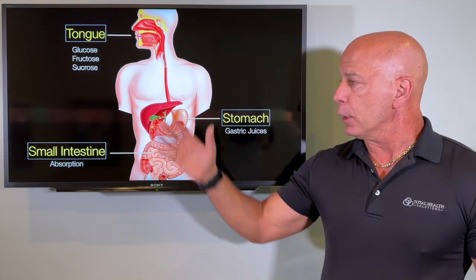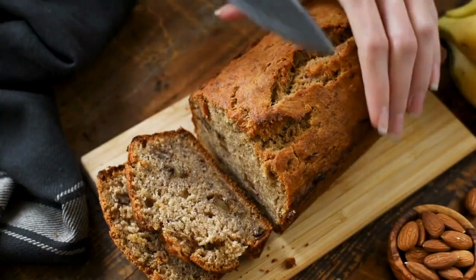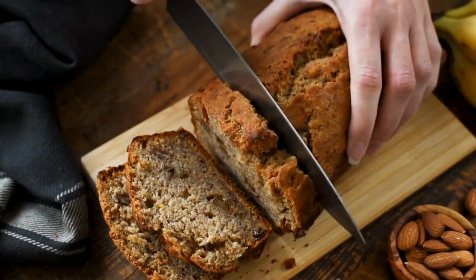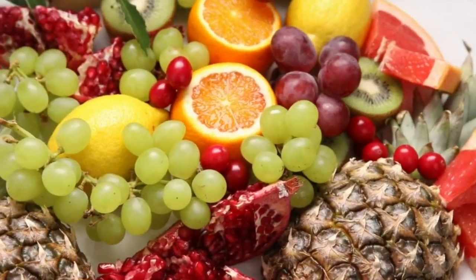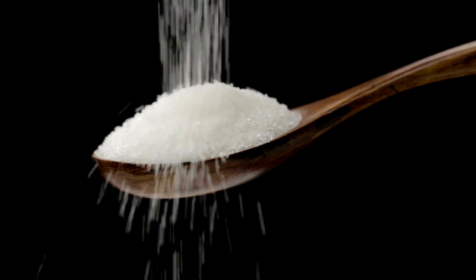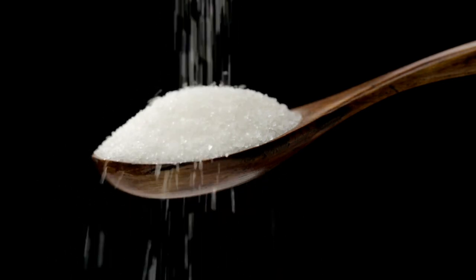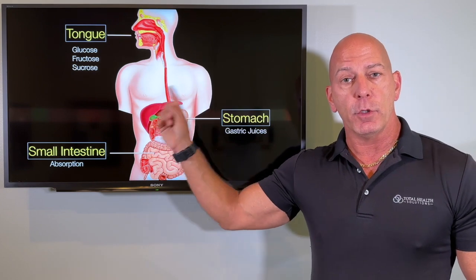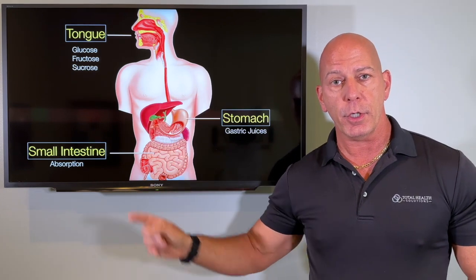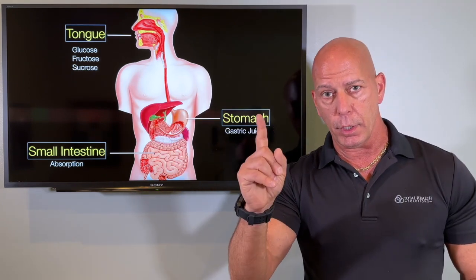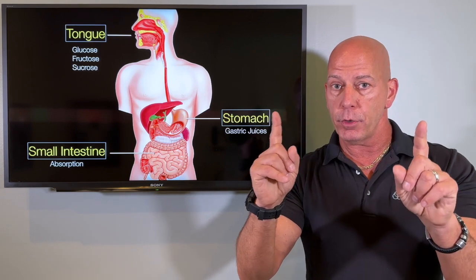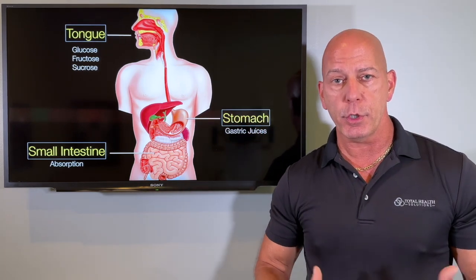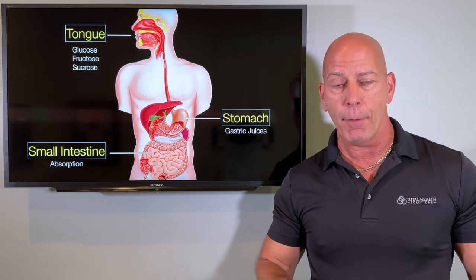Glucose is the main sugar that we all refer to when we're talking about glycemic index. Fructose is, of course, fruit sugar. Now, sucrose — many of you don't realize — is actually a combination of glucose and fructose. So if you take one molecule of glucose and one molecule of fructose and put them together, you get sucrose. And sucrose is basically table sugar.